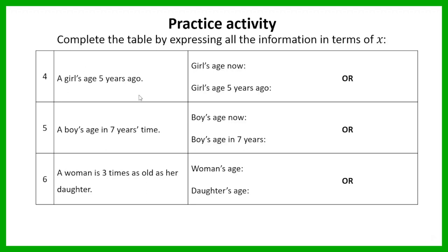Let's see how you did. For question four — a girl's age five years ago — there are two ways. If I make the girl's age now x, then her age five years ago is x minus 5. But if you've been asked to work out her age five years ago, make that x, and then her age now would be x plus 5, because if you know how old somebody was five years ago, you add five to find their current age.